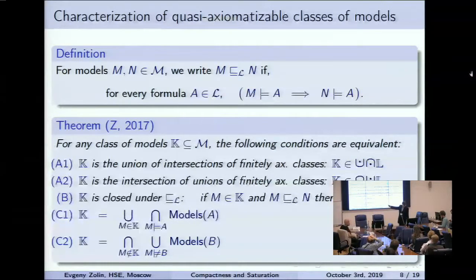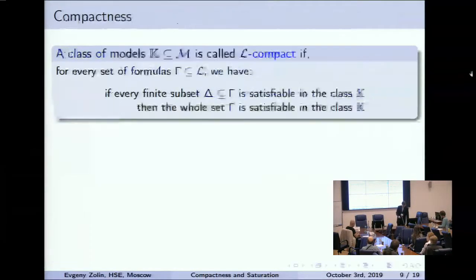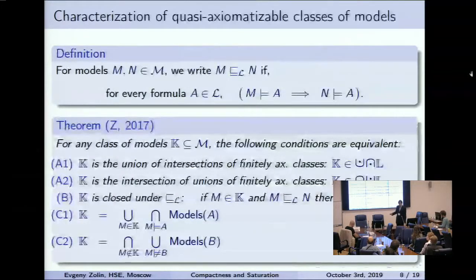We can even add explicit representation of this class as the union of intersections and intersection of unions of finitely axiomatizable classes. Usually the equivalence proof uses the axiom of choice, but here we succeeded to prove it without the axiom of choice, very easily. Next, we want to characterize similarly the other three lines: axiomatizable classes, finitely axiomatizable, and coaxiomatizable.